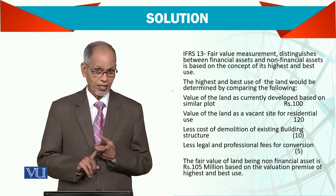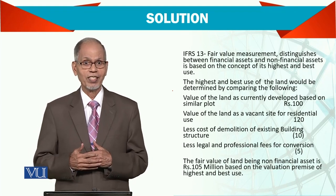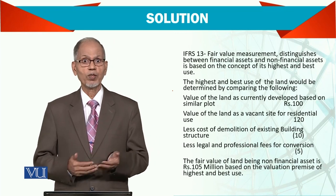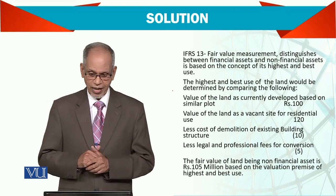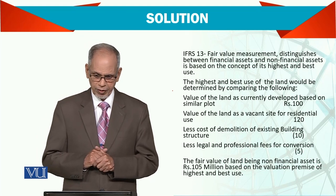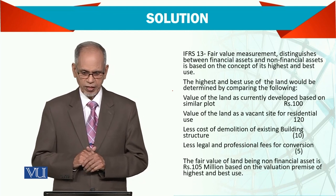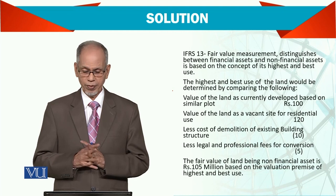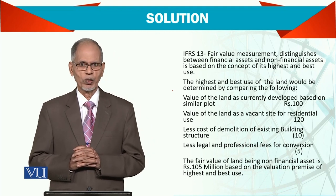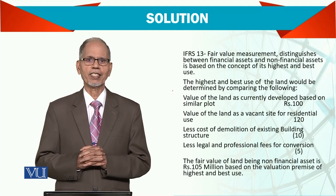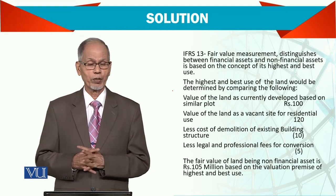Now, you have the plant, and you want to make the best use of it. The best use is to turn it from industrial to residential. The highest and best use of the land would be determined by comparing the following: value of land as currently developed — based on a similar plot — is 100 million; value of land as a vacant site for residential use is 120 million. So technically we should take 120, but as mentioned, if there is a cost involved, that cost must be considered.